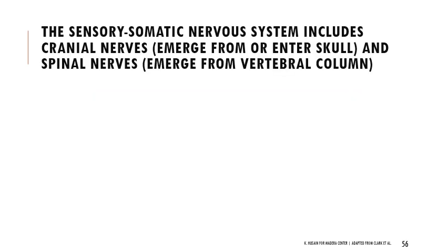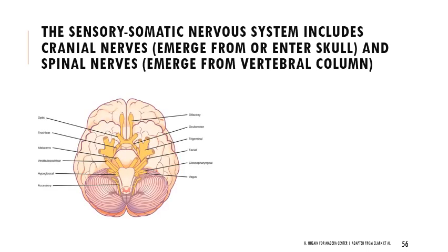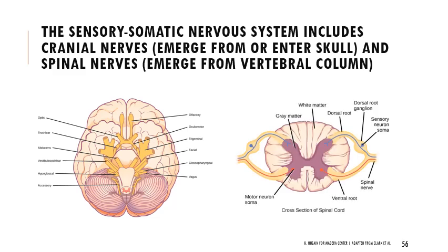The sensory somatic nervous system covers conscious control and voluntary responses. This includes cranial nerves, which emerge from or enter into our skull - there are 12 main cranial nerves associated with things like vision and taste. There are also spinal nerves that emerge from the vertebral column. Here you can see gray matter and white matter on the spinal cord, and spinal nerves labeled on the right side emerging from the spinal column.